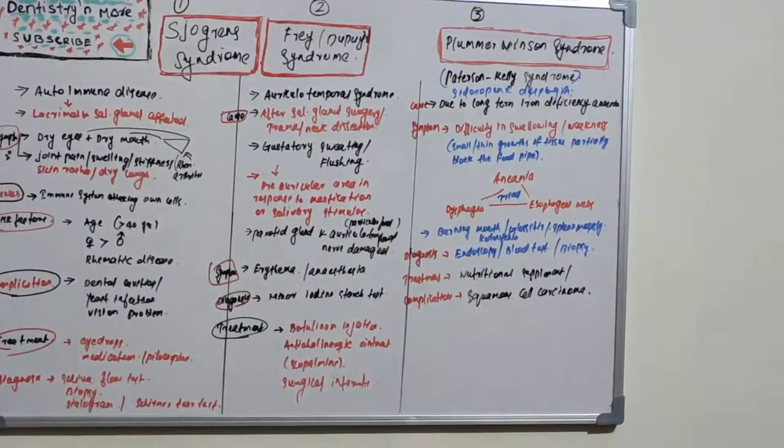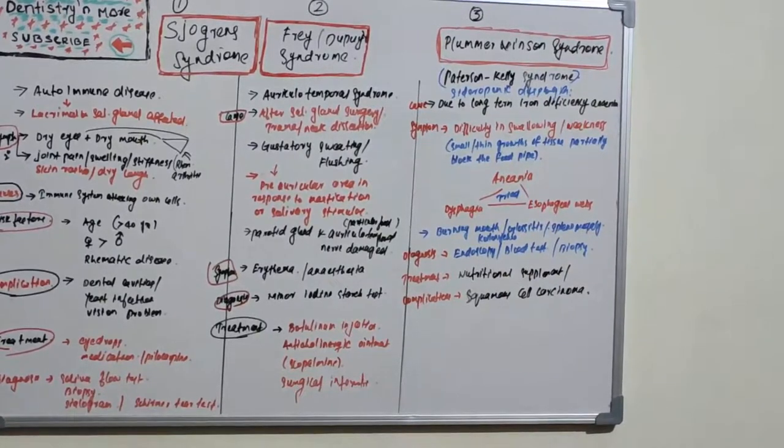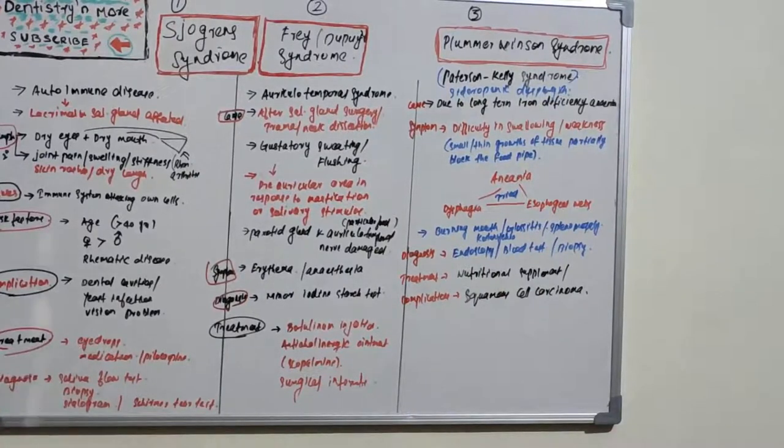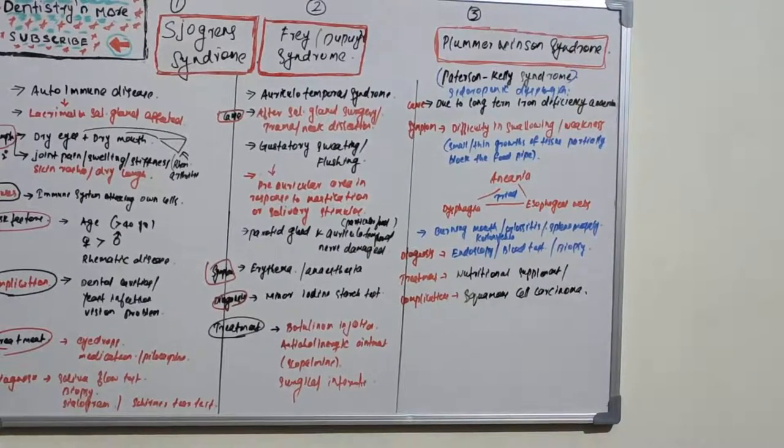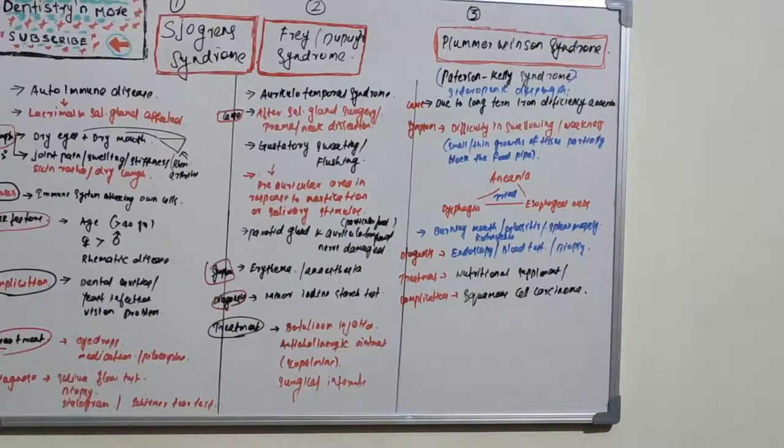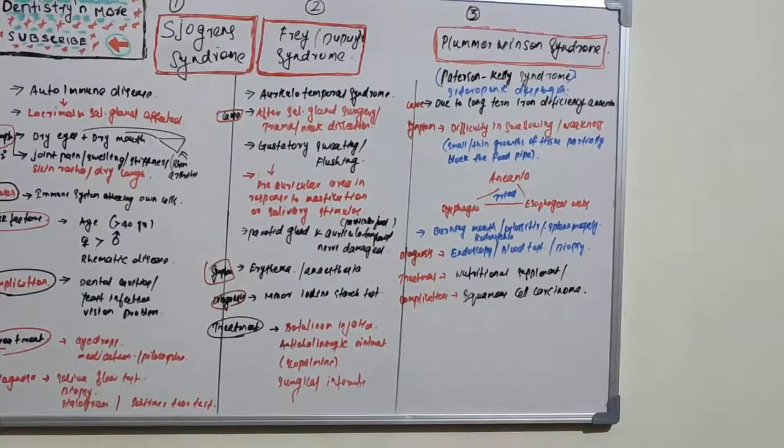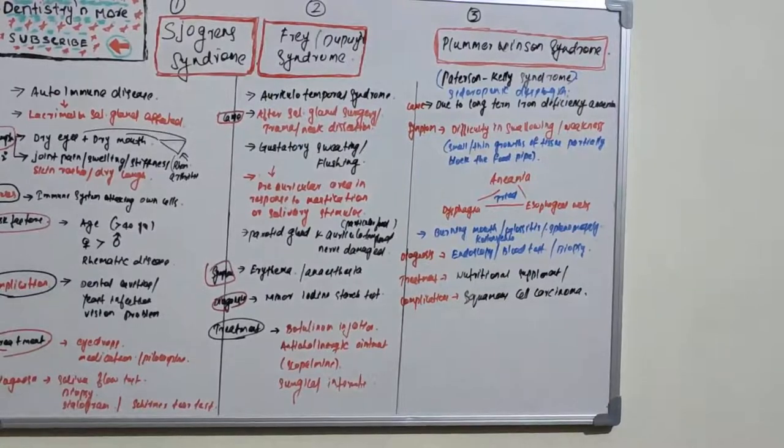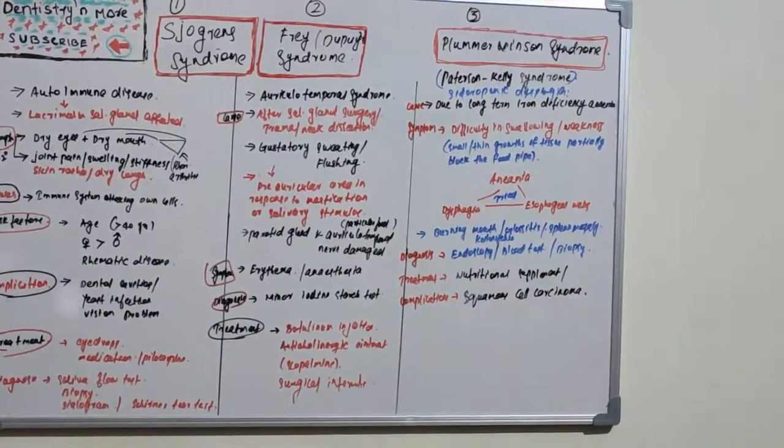How do we treat this? Treatment is very symptomatic. We can provide eye drops, also known as crocodile tears, and pilocarpine for the salivary glands to improve saliva. We can suggest the patient sip water frequently and also use saliva-producing chewing gums. In a symptomatic way, we can manage this.